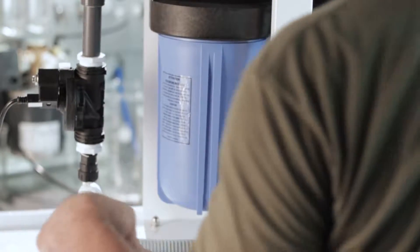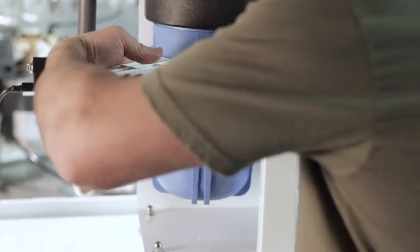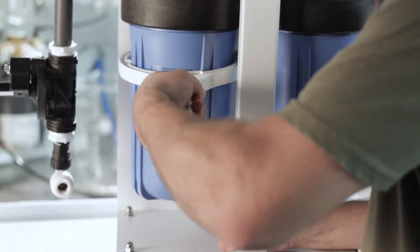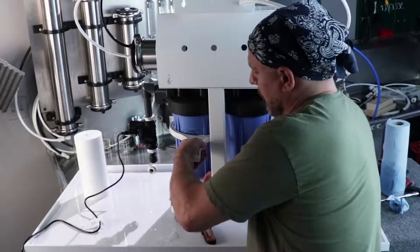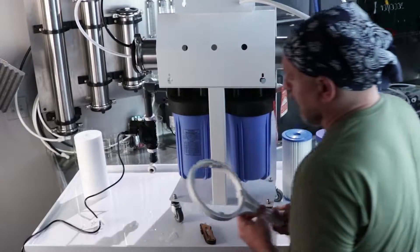Take your wrench, hold the unit, brace it somehow, and just give it a good turn. Don't over tighten it. You just want the O-ring to seal, and that's good enough.